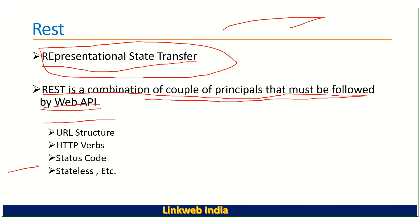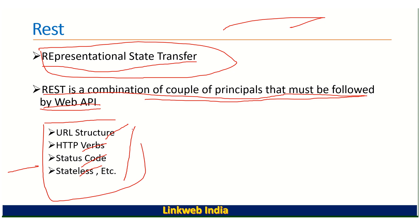There are four principles in REST. The first one is URI structure, the second one is HTTP verbs, the third one is status codes, and the fourth one is stateless. These are the principles which we have to follow in our web APIs while developing in any technology. REST is basically just a pattern or architectural style which we have to follow while developing our APIs.